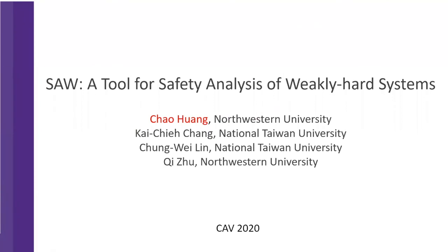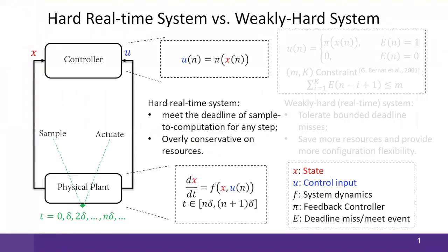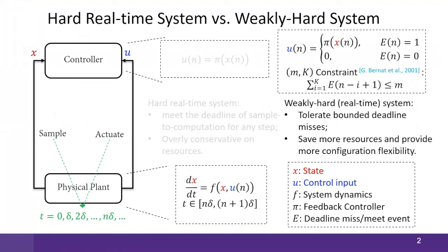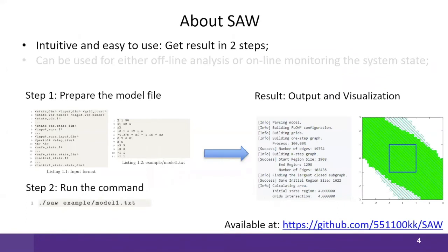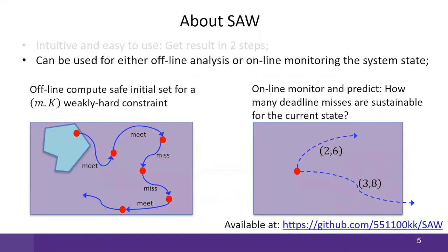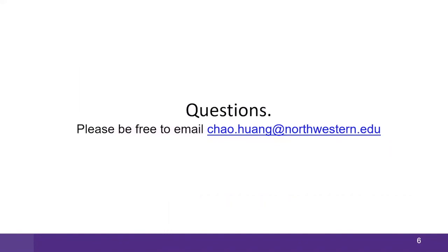Hi, I'm Chao Huang. I'm very glad to introduce our tool SOLVE for safety analysis of weakly-hard systems. In hard real-time systems, the deadline of each computation must be met at every step, which can cause overly conservative resource consumption. Thus, weakly-hard systems are proposed to tolerate bounded deadline misses, described by an M/K constraint, saving more resources and providing more configuration flexibility. Our tool SOLVE addresses the safety verification problem of weakly-hard systems and provides a safe initial dataset. It is very intuitive and easy to use — you can get a result in just two steps — and can be used for either offline analysis or online monitoring of system state.